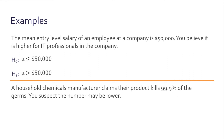The second example: a household chemicals manufacturer claims their product kills 99.9% of germs — you've probably heard that one before — and you suspect the number may be lower. The null hypothesis is that the mean equals 99.9% and the manufacturer is not lying; their product does what they claim. However, the alternative hypothesis is that the product kills less than that.